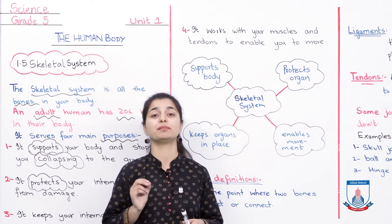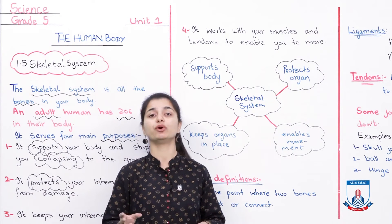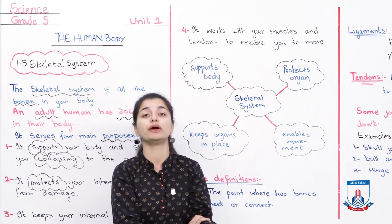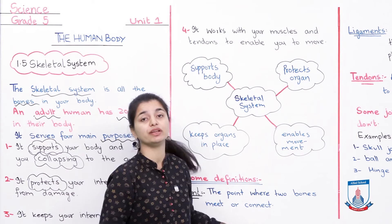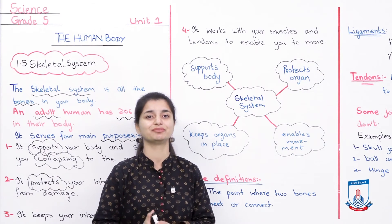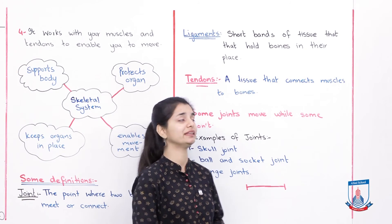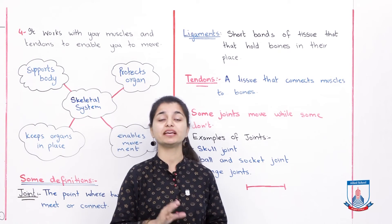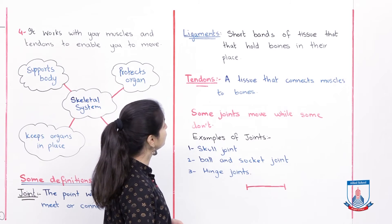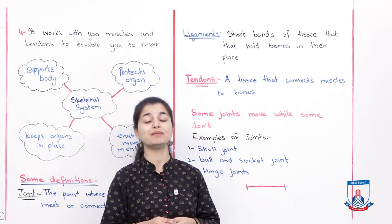I hope you understand what a joint is. Look at these two bones — one bone is attached at the shoulder to the elbow. The two bones connect at a point, and that point is called a joint. Now we have more definitions linked to the skeletal system.